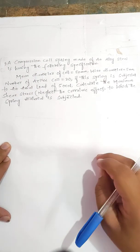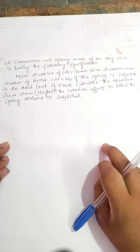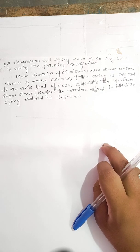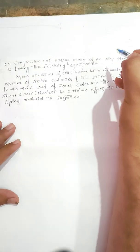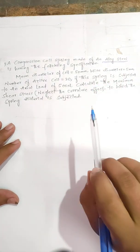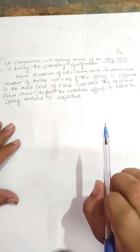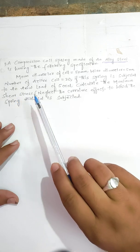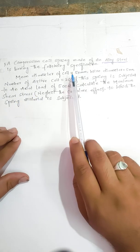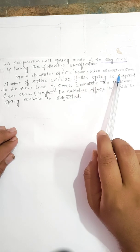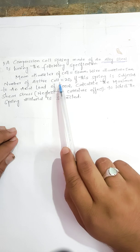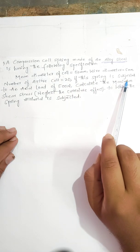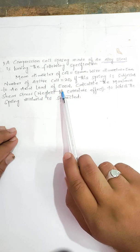Good morning students. Today we are going to learn the first problem on the compression coil spring. The compression coil spring is made of alloy steel with the following specifications: the mean diameter of the coil is given as 50 mm, the wire diameter is given as 5 mm, and the number of active coils is given as 20. The spring is subjected to an axial load of 500 Newton.